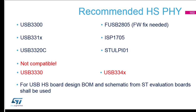Another common issue is customers selecting a high-speed PHY incorrectly. As mentioned, in most cases the USB high-speed peripheral requires an external high-speed PHY — the only exception is the F723, where the high-speed PHY is already embedded. For F2, F4, other F7, and H7 chips, you need an external USB PHY connected through the ULPI interface. We have a list of tested and recommended PHYs used on our boards, plus some tested during customer support engagements.